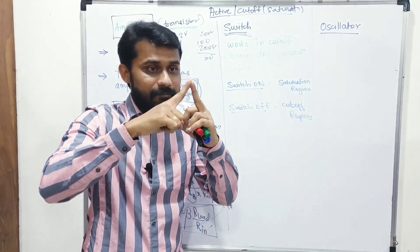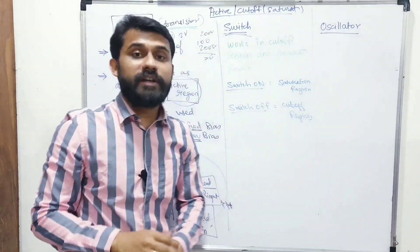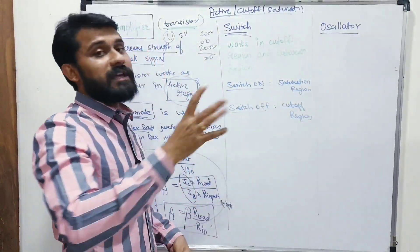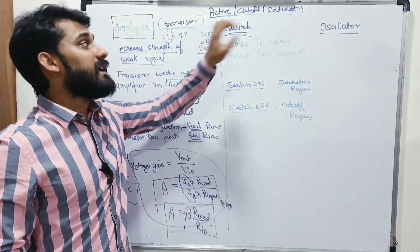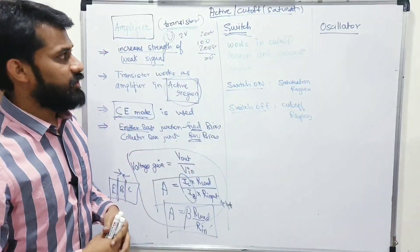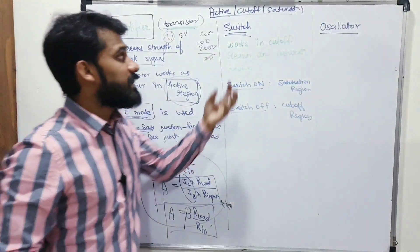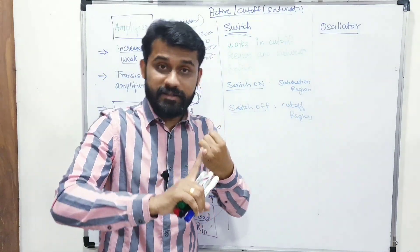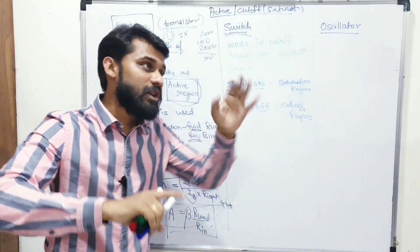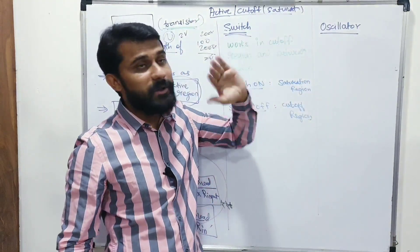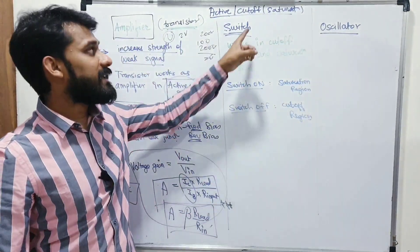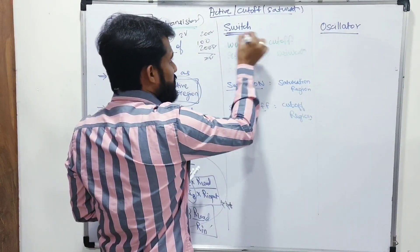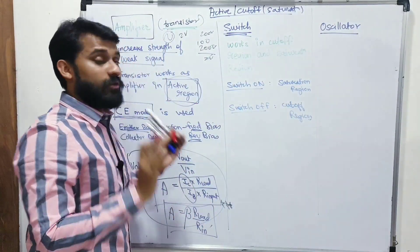A transistor can be used as a switch when a high-power device is involved or when very high frequency on-off switching is required. We already know the transistor has three operating regions: active, cut-off, and saturation. When used as an amplifier, it works in the active region. When used as a switch, it works in either cut-off or saturation.